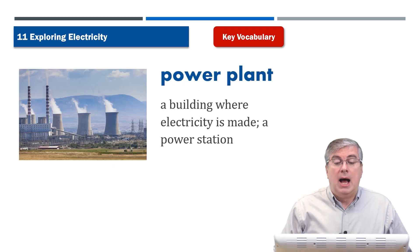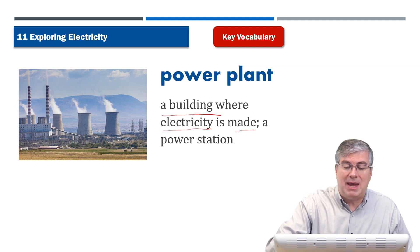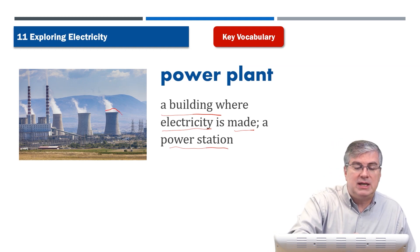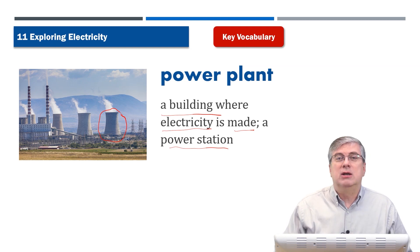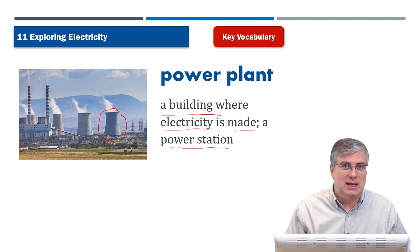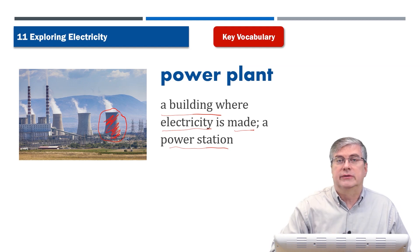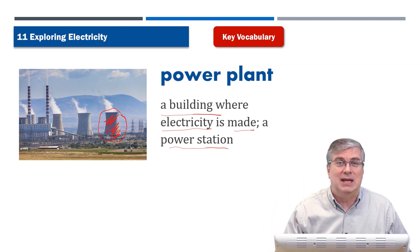A 'power plant' — there are many kinds. A power plant is a building where electricity is made, also called a power station. You may notice this type of power plant has a very unique-looking tower — that is a symbol of a nuclear power plant, using nuclear energy to produce electricity. Other power plants, like a dam, use water to turn the turbine to make electricity — a dam can also be a power plant.